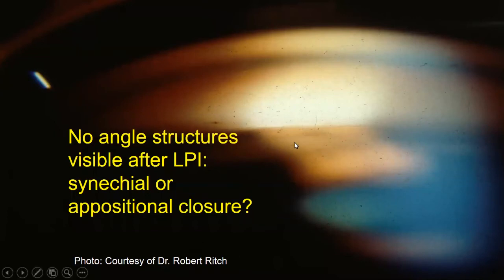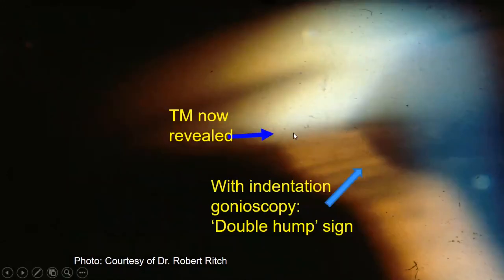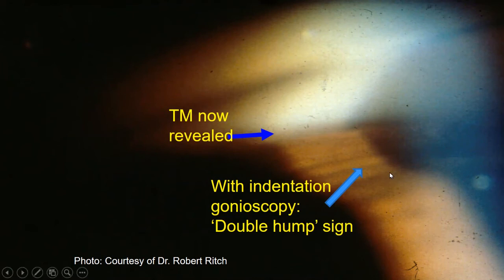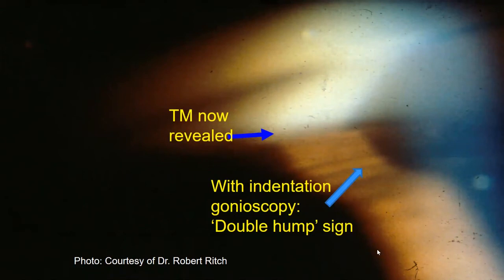In this gonioscopic view of the angle, you can see that there are no visible angle structures. Under these circumstances, we would next decide whether this is synechial or appositional closure, and we can then perform indentation. With indentation, the angle has opened up with the trabecular meshwork revealed, confirming appositional angle closure. In this particular eye, you can also see a very distinct double-hump configuration of the anterior surface of the iris. This is because a very prominent and anteriorly positioned ciliary body is pushing against the peripheral iris — a very classic example of plateau iris configuration. The other hump, more anterior and central, represents the iris draping over the anterior surface of the physiological lens.